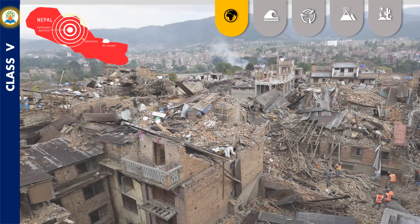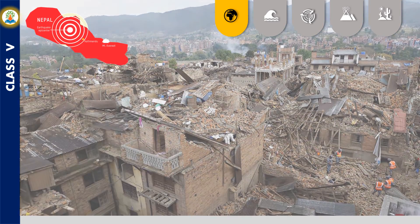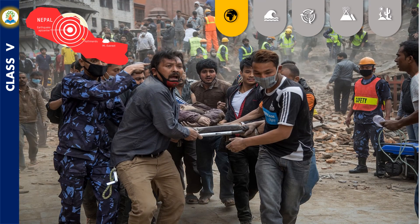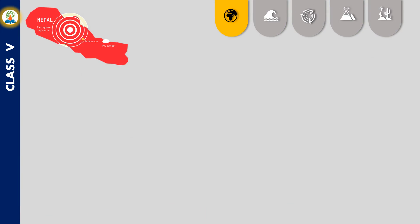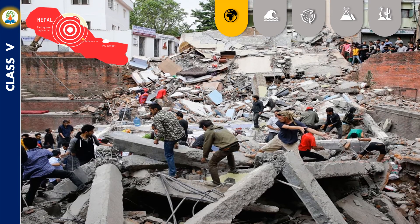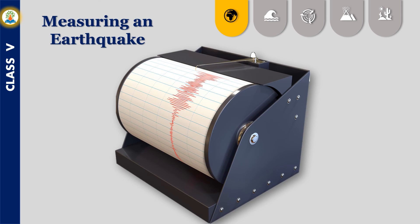The April 2015 Nepal earthquake occurred at 11:56 NST on 25th April. Its epicenter was east of the district of Lamjung. It was the worst natural disaster to strike Nepal since the 1934 Nepal-Bihar earthquake. A seismograph is used to detect the strength of the waves generated by an earthquake; the pattern obtained by a seismograph is known as a seismogram.